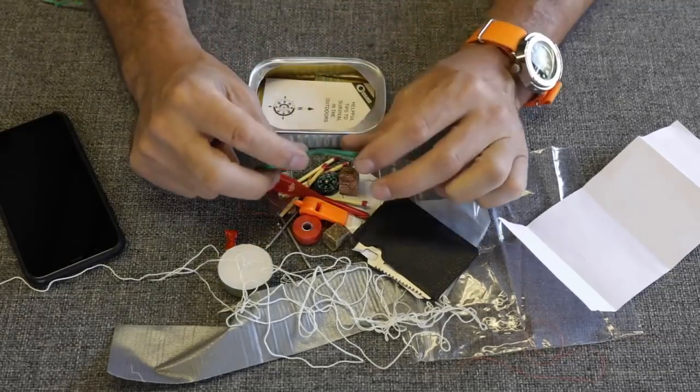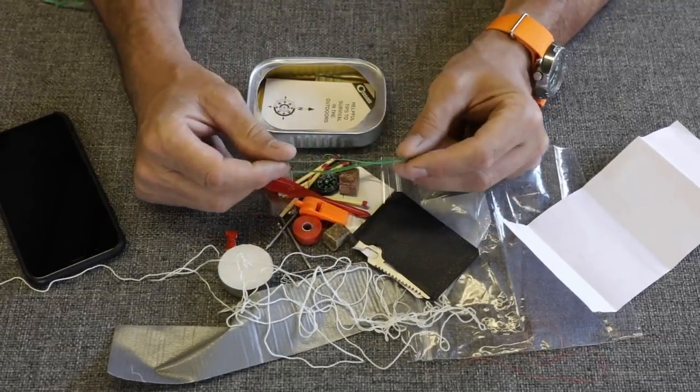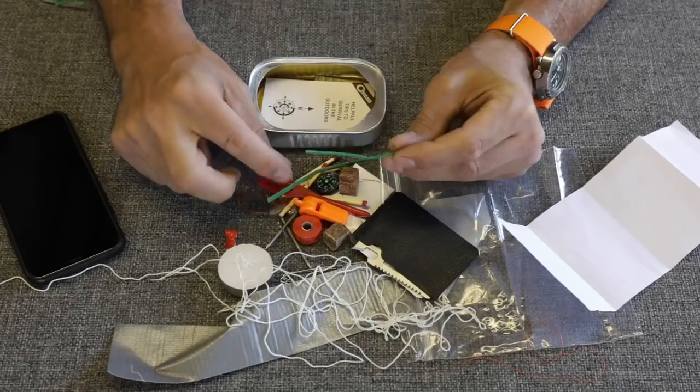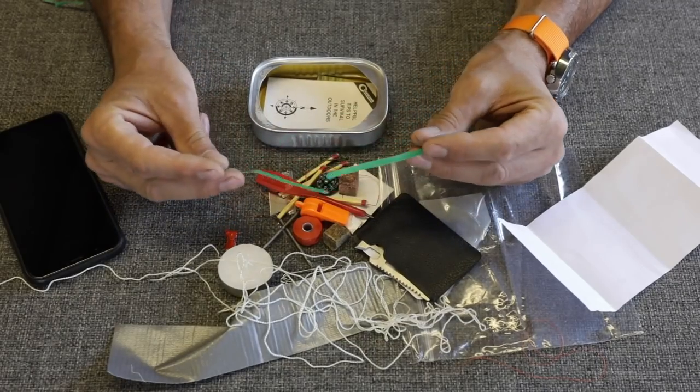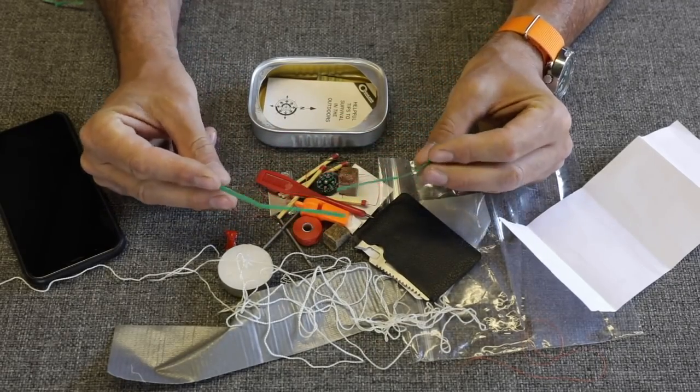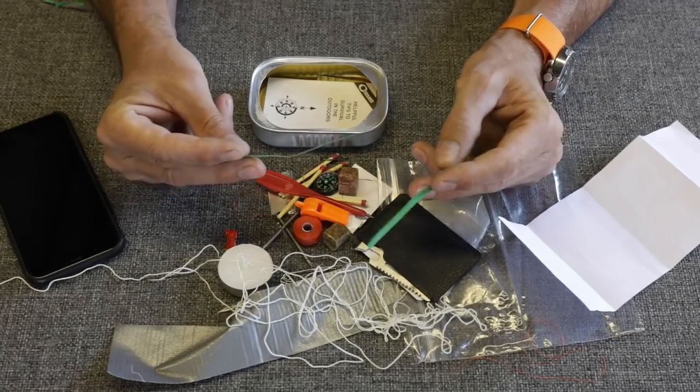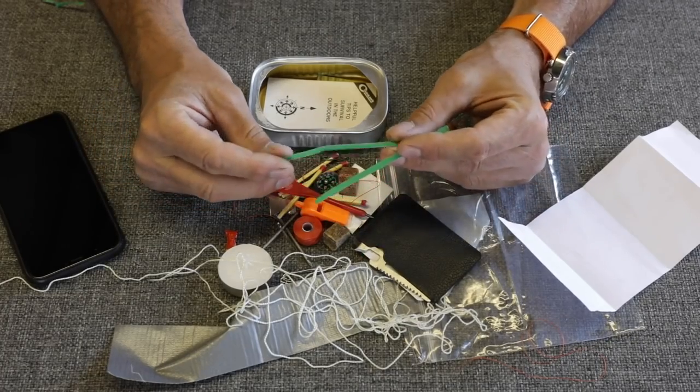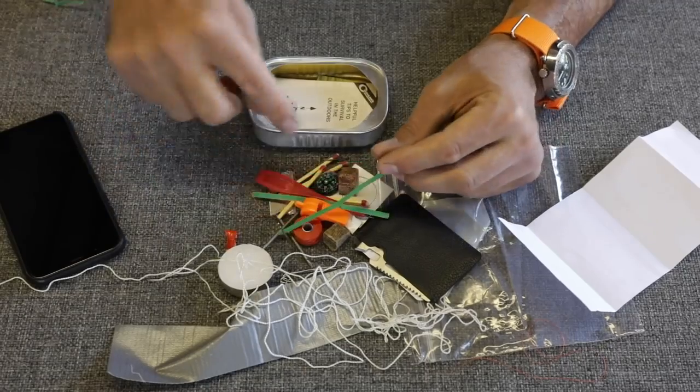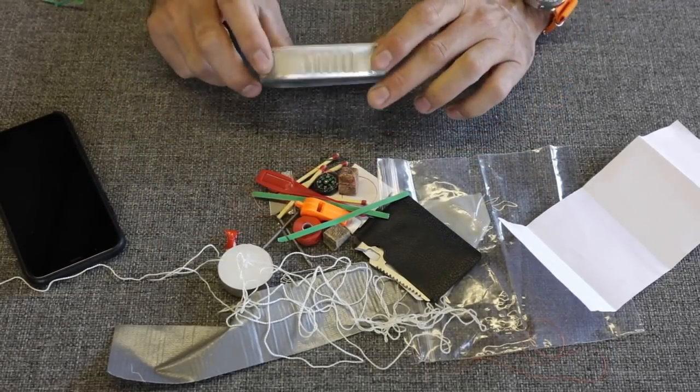We've got two bread bag zippy ties. I don't know what these would be good for other than keeping your bread from getting stale. A couple of zip ties would be a better addition to this, more useful, and they would curl around in there and they would certainly fit.